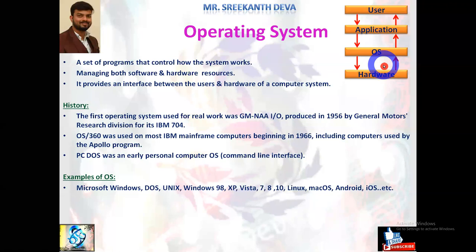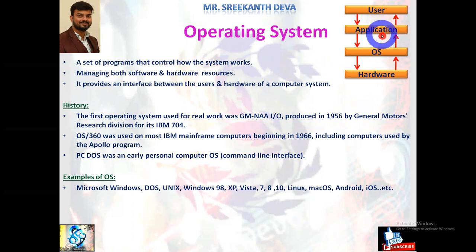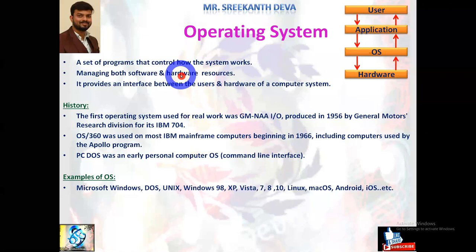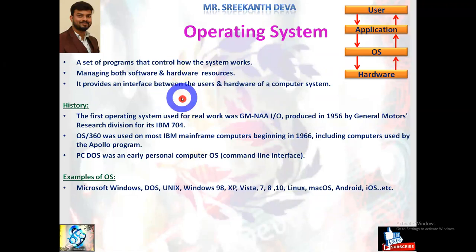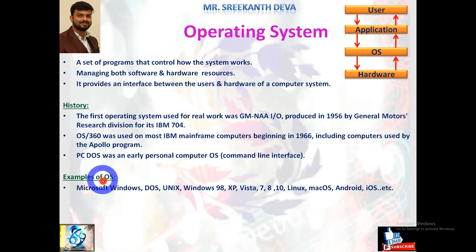The operating system also handles establishment of priority systems, assignment of software programs, automatic installations, and error handling. It enables inbuilt applications and also allows user-defined applications in the form of application software. Simply, the operating system manages both software and hardware resources. It is a set of programs that controls how the system should work and provides an interface between the user and the hardware of the computer system. Types of operating systems were explained in detail in the previous video session.